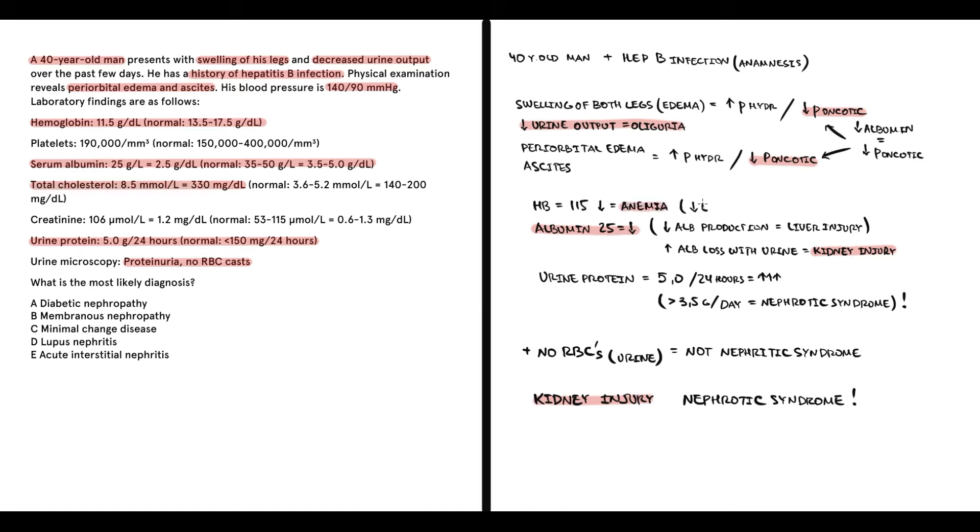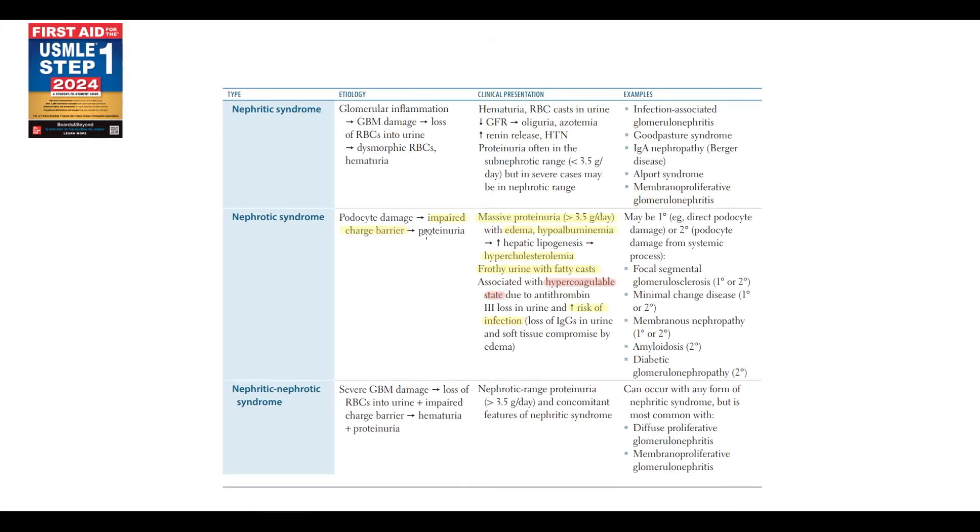His anemia can be explained by decreasing erythropoietin production due to kidney injury. But how to explain increasing total cholesterol? Recall that we have two major groups of glomerulonephritis: glomerulonephritis characterized by nephrotic or nephritic syndrome. In this case patient has proteinuria greater than 3.5g per day and he has no red blood cells. So it's definitely nephrotic syndrome. And as we see, nephrotic syndrome is characterized by increasing total cholesterol and decreasing total albumin concentration, which are both present in this case.